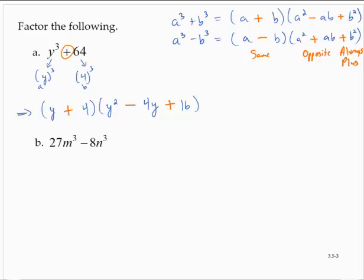Second exercise is a little tougher. 27m cubed, well, that's the cube of 3m. 8n cubed is the cube of 2n. So I see this as a difference of cubes, binomial, trinomial, the a, the b.